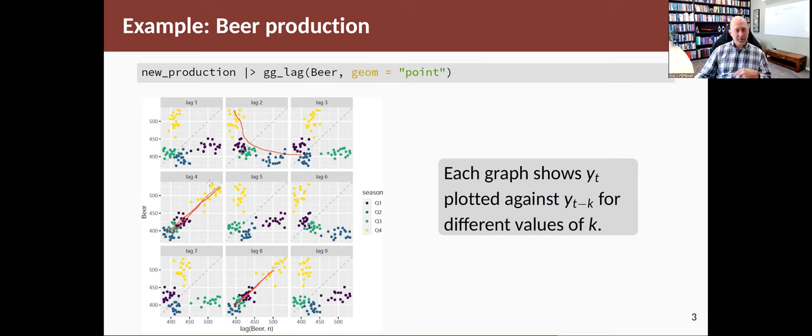In a series which has strong seasonality like the beer data, the peaks which occur in quarter four will be plotted against peaks occurring in quarter four of the previous year. Whereas when you plot them two lags apart, as we've got up in this graph, you're plotting the peaks against the troughs. So you get the peaks here in quarter four, the yellow section, they're plotted against low values, they're plotted against quarter two values.